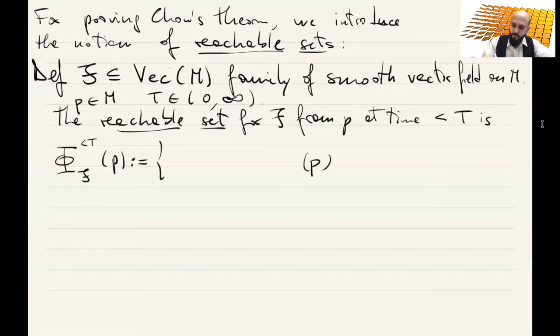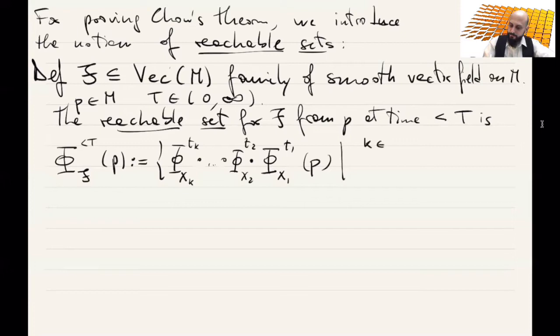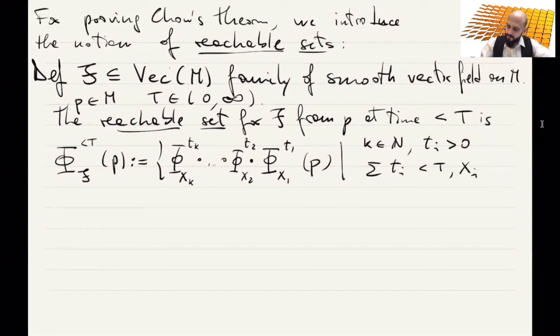The reachable set for F from P at time less than T consists of all points you can obtain by flowing with vector fields in F. You take a vector field X1 and flow for some time T1, then flow again with X2 for time T2, and so on, doing this K times. The Ti's are positive, K is a natural number, the sum of all the times is less than T, and most importantly the vector fields Xi are in the family F.